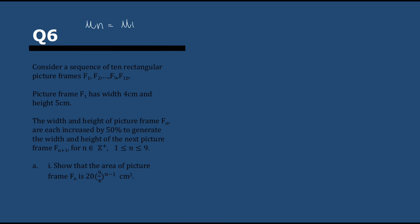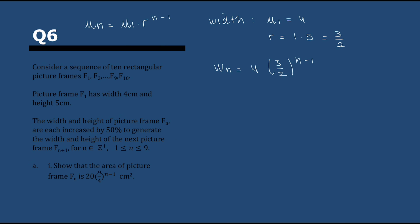Question 6 — this one is hated by all, but it's actually not that difficult. Both width and height increase by 50% with each frame, so this is a geometric sequence. u₁ for width is 4, so wₙ = 4 × (3/2)^(n−1). The same goes for height: lₙ = 5 × (3/2)^(n−1). We multiply these together for the area, since we're talking about the area of the frame. So f(n) = wₙ × lₙ = 20 × (9/4)^(n−1).